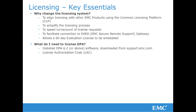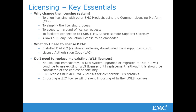To license DPA under the common licensing platform, you need to have DPA 6.2 or above installed and a license authorization code, or ELAC. Upgraded or migrated DPA 6.2 systems will continue to use existing .wls licenses until they are replaced. They don't need to be replaced immediately, although they should be considered at the very earliest opportunity.